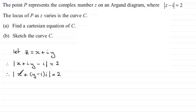And what I'm going to do now to get rid of the modulus is square both sides. So doing that gives us x squared plus y minus 1 all squared, and that equals 2 squared, which is 4.